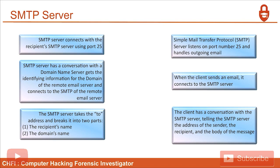The SMTP server takes the address and breaks it into two parts: the recipient name and the domain name. Then the SMTP server has a conversation with the domain name server, gets the identified information for the domain of the remote email server, and connects to the remote email server.